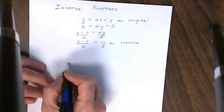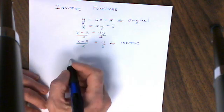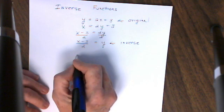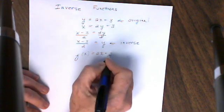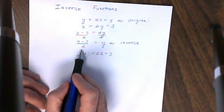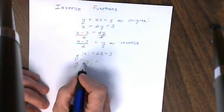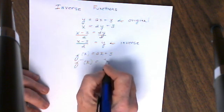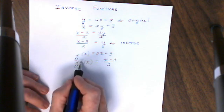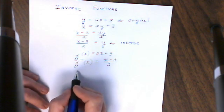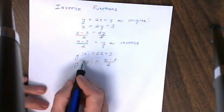To show the relationship between these two equations, I'm going to use a different kind of mathematical notation. Instead of saying y equals 2x plus 3, I'm going to say f of x is equal to 2x plus 3. And instead of saying y equals x minus 3 divided by 2, I write f inverse of x is equal to x minus 3 divided by 2. This notation of the negative 1 does not indicate an exponent — it indicates an inverse. F inverse here is the inverse of my original f function.